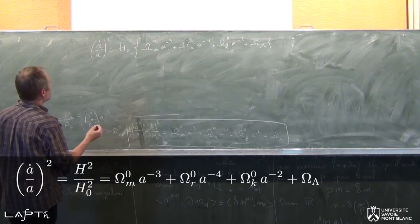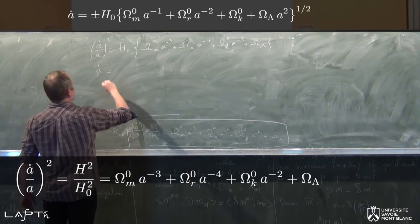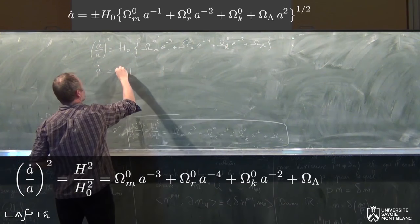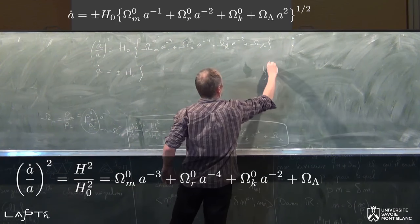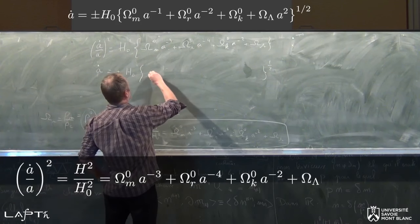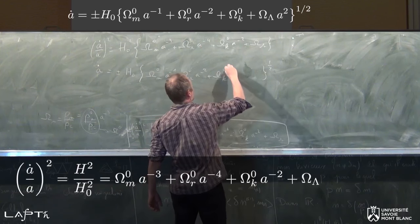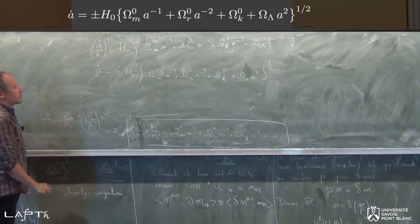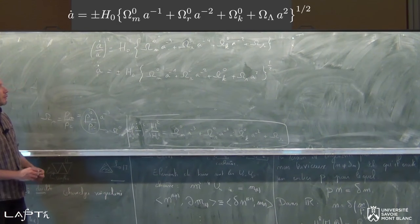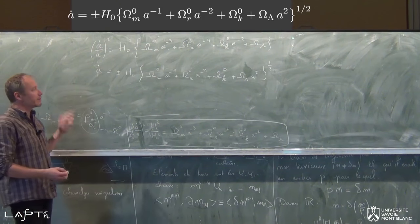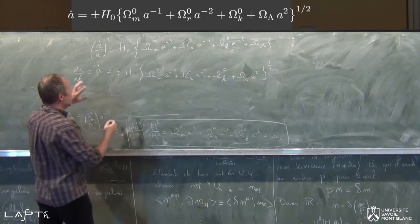En multipliant par A au carré et en prenant la racine carrée, on a un plus ou moins ici. A point est égal à ±H₀ fois la racine de Ω_M0 A⁻¹ plus Ω_R0 A⁻² plus Ω_K0 plus Ω_lambda A². Voilà l'équation différentielle qu'on veut résoudre. La manière de la résoudre qui vient vraiment très naturellement, c'est de séparer les variables, et de placer dA au numérateur et dt de l'autre côté.